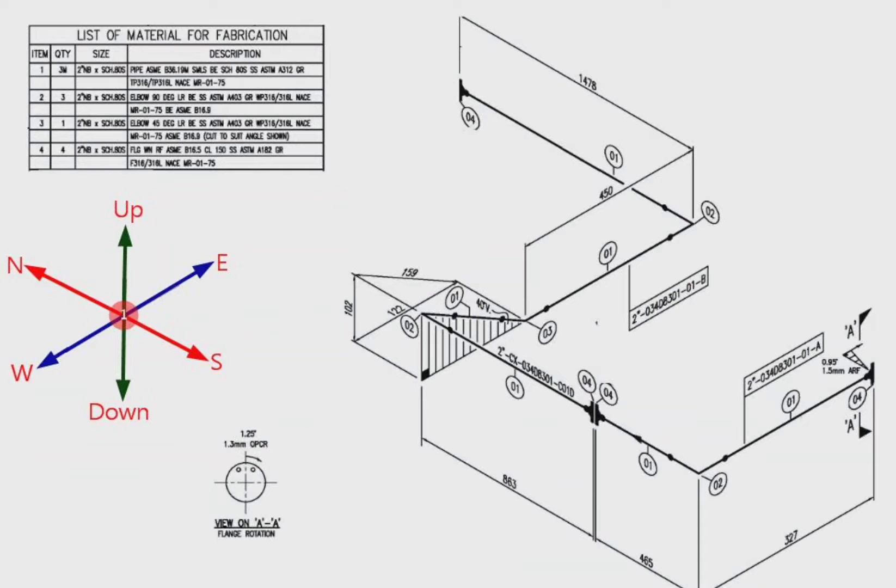Welcome to ProMaster. In this video we will learn reading the pipe drawing correctly and watch a 3D model of pipe isometric. Then we will bend the wire in the pipe drawing according to the rule we learned. This is very useful information for pipe fitters. Let's start the video.